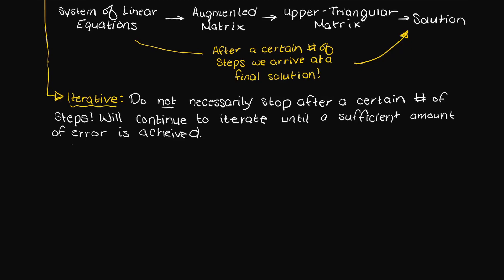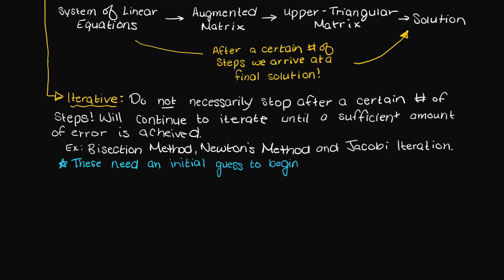Some examples of iterative numerical methods are the bisection method, Newton's method, and Jacobi iteration. Additionally, when using iterative solvers, you need an initial guess to begin with. We will talk about the importance of this guess in future videos on iterative methods.